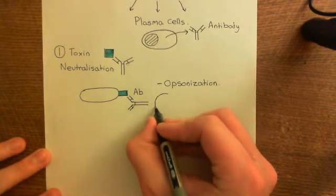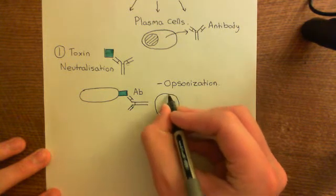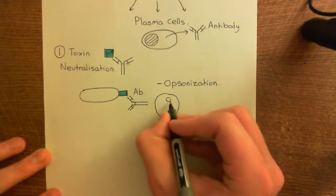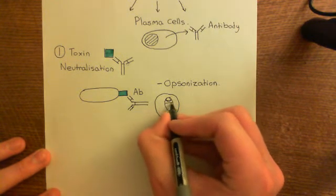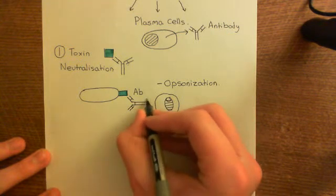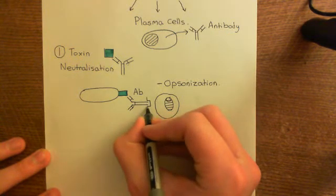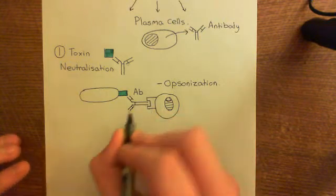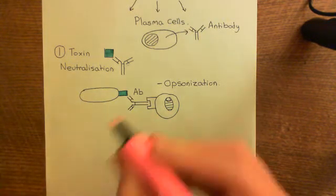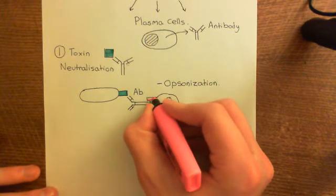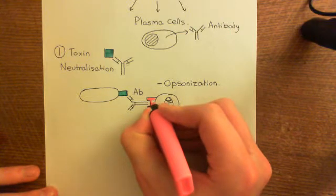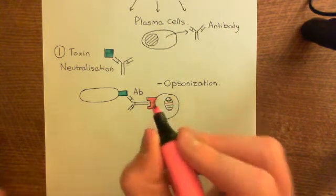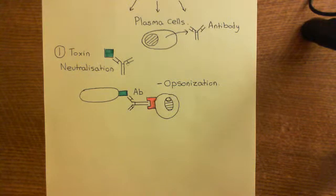This is because the phagocyte — let's draw a macrophage here — will have a receptor for the antibody on its surface. The receptor will bind to the fixed region of the antibody. And once it's bound to that antibody, it will then start invaginating its membrane around the microbe that it's got hold of, and then engulf it into a phagosome and digest it within the phagosome.